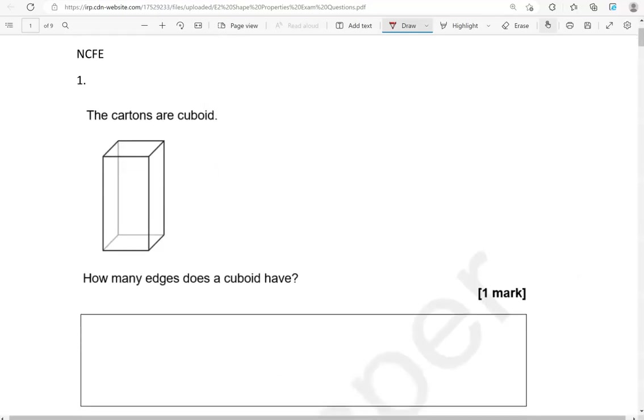The cartons are cuboid. How many edges does a cuboid have? The edges are where the two faces meet, so that's an edge, that's an edge, that's an edge, and that's an edge.